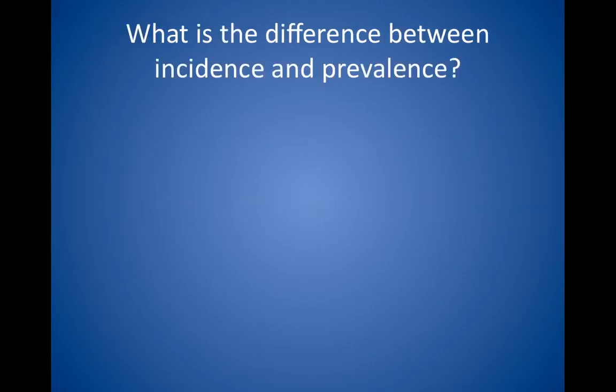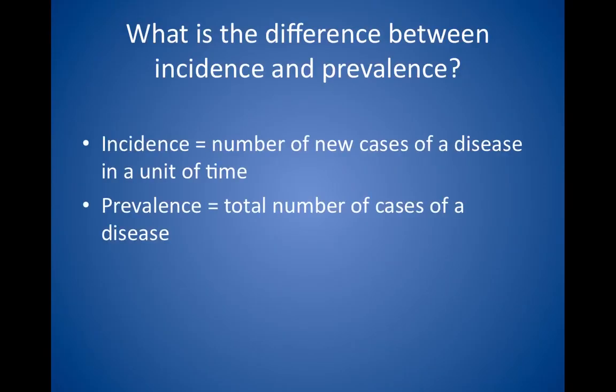What is the difference between incidence and prevalence? Incidence is the number of new cases of a disease in a unit of time, generally one year, but any timeframe can be used. The incidence of a disease is equal to the absolute or total risk of developing a condition, as distinguished from relative or attributable risk. Prevalence is the total number of cases of a disease, new or old, at a certain point in time.